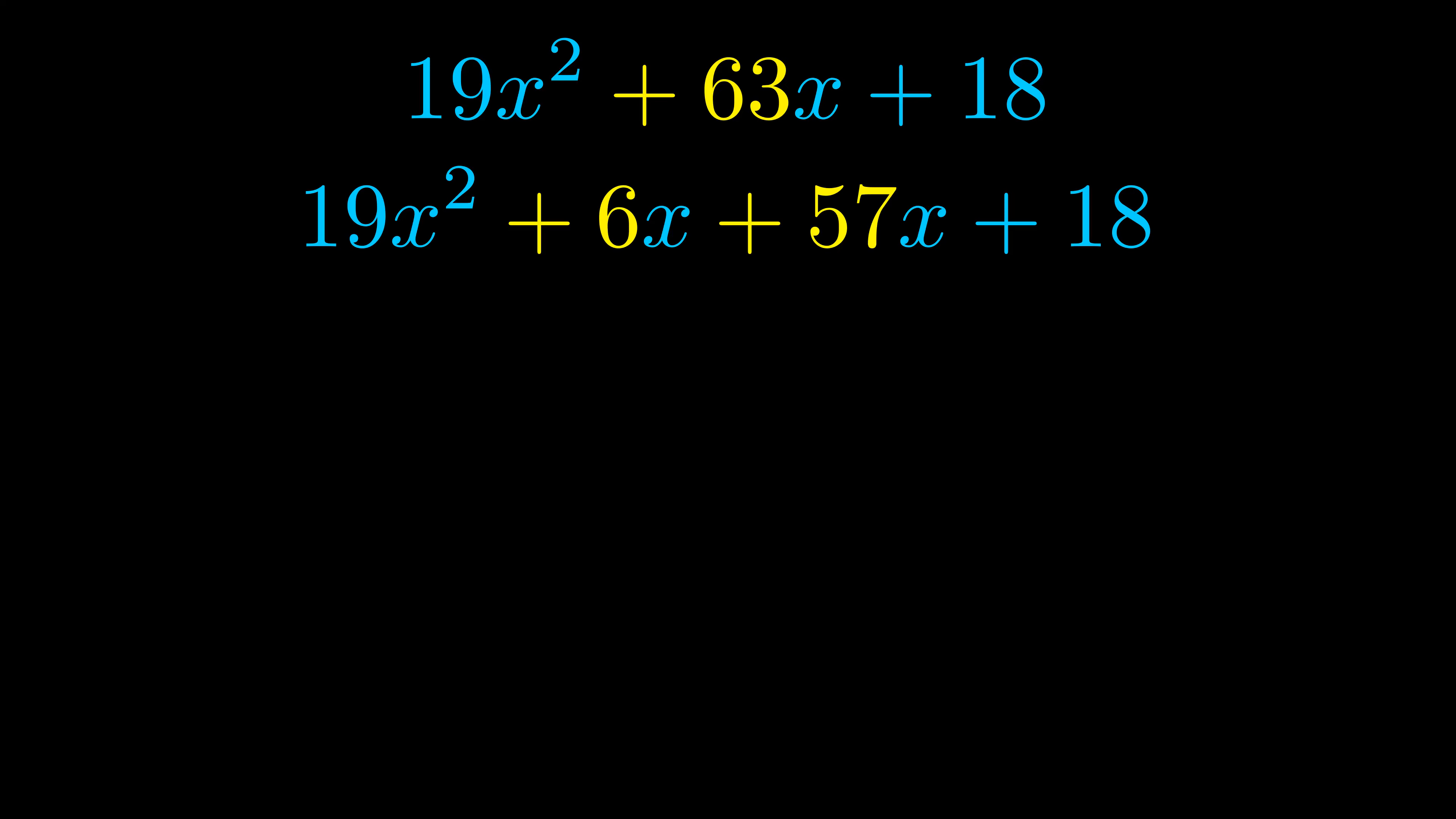Once we've done this we go ahead and put parentheses around the first term and the last term. And we do that so that we can take the greatest common factor out of both terms.